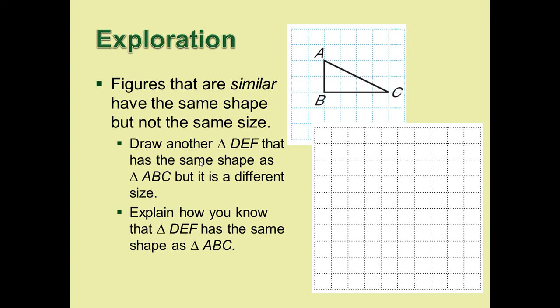For notes here today, two polygons are similar if they have the same shape but do not have the same size. Think of a model car and a real car. A little Hot Wheels car has the same shape as a real car, but they're certainly not the same size.